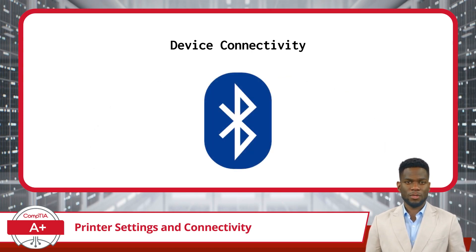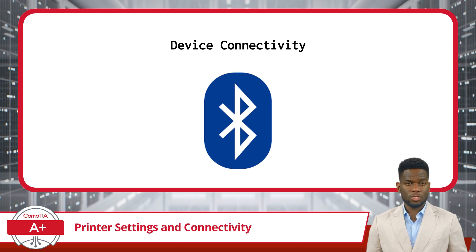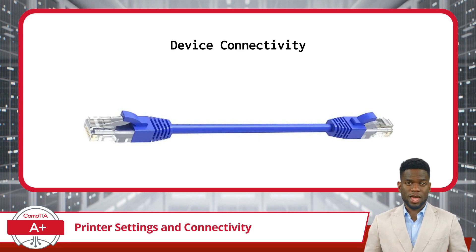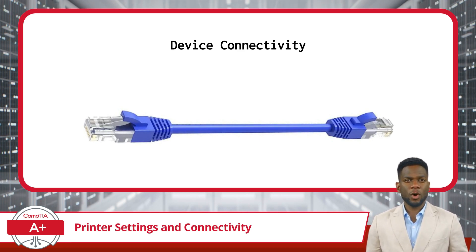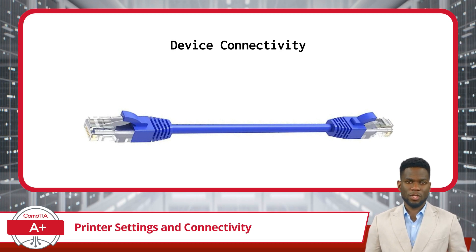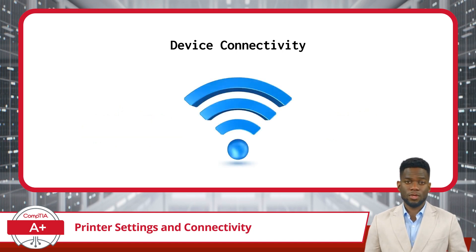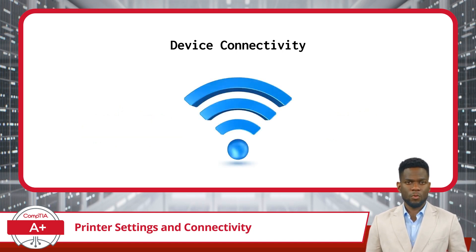Though less common, the wireless Bluetooth interface can also be used as an alternative for a local connection setup. If the printer or scanner is to be made available to an entire network of devices, a wired network connection would be made with an Ethernet CAT cable that uses RJ45 connectors. The wireless alternative for a network connection would be Wi-Fi.